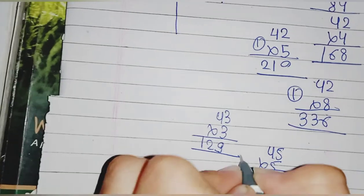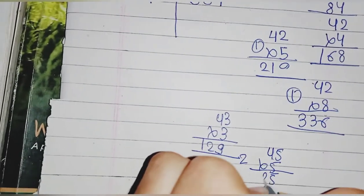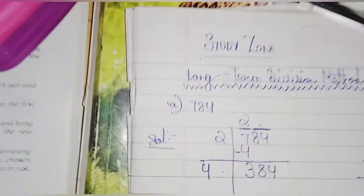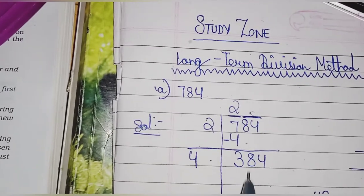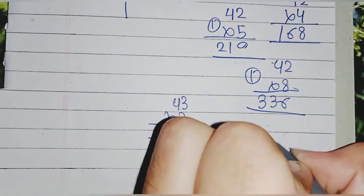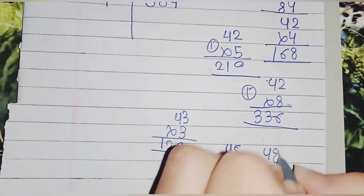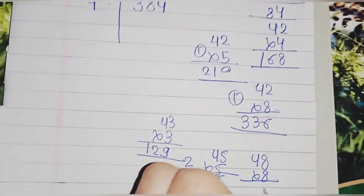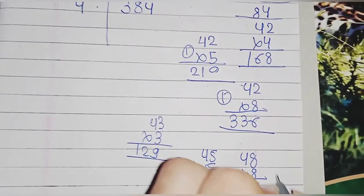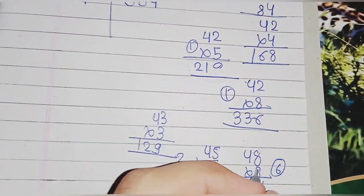We will try 48×8. It will be 64, 4, 6, here 8. 8×4 are 32, 32+6 is equal to 38. Now here we have got our appropriate number, that is 384.